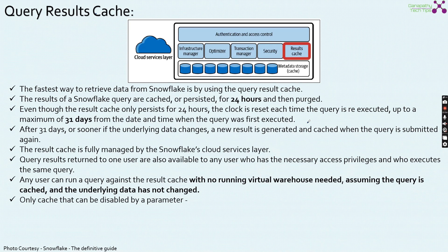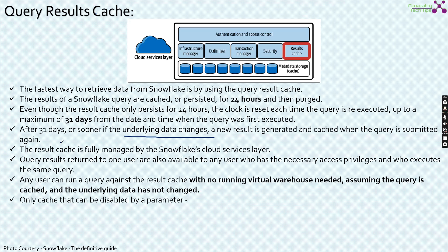Within 24 hours, if you fire the same query again and again, your results will remain available in the results cache. After 31 days, or sooner if the underlying data changes, a new result is generated and cached when the query is submitted again. If the base data changes, the cache needs to be refreshed through normal operations. The results cache is fully managed by Snowflake's cloud services layer. Query results returned to one user are also available to any other user who has the necessary access privileges and executes the same query.